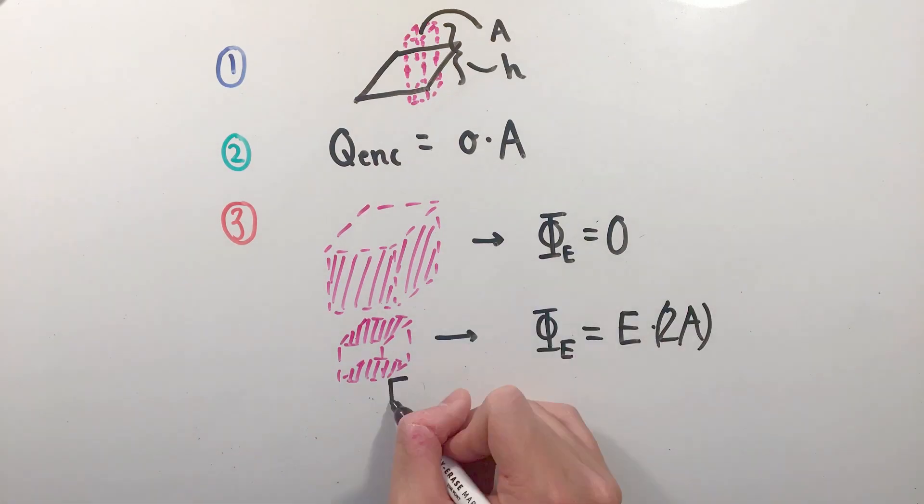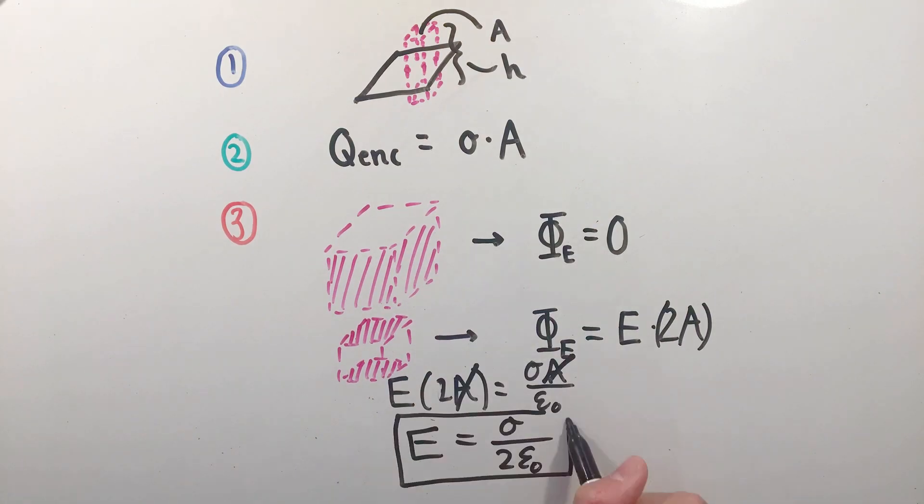Simplifying and seeing our made-up variables A and H cancel or disappear once again, we can solve for the electric field due to a uniform, infinite plane of charge.